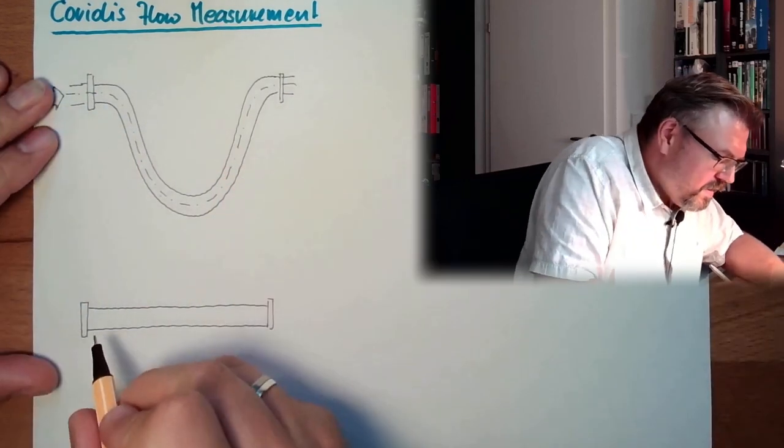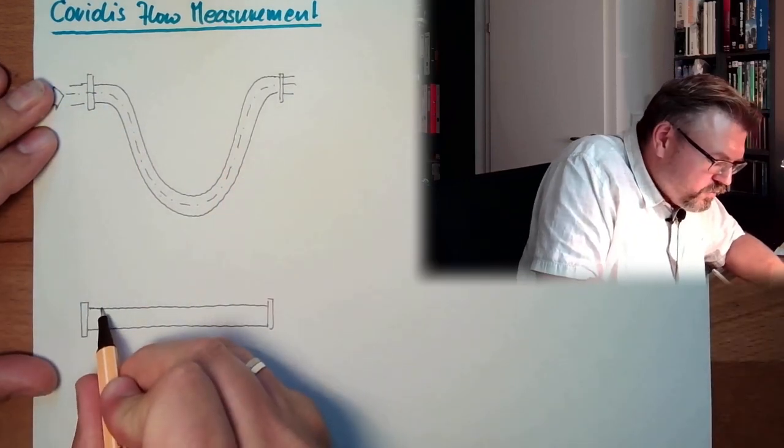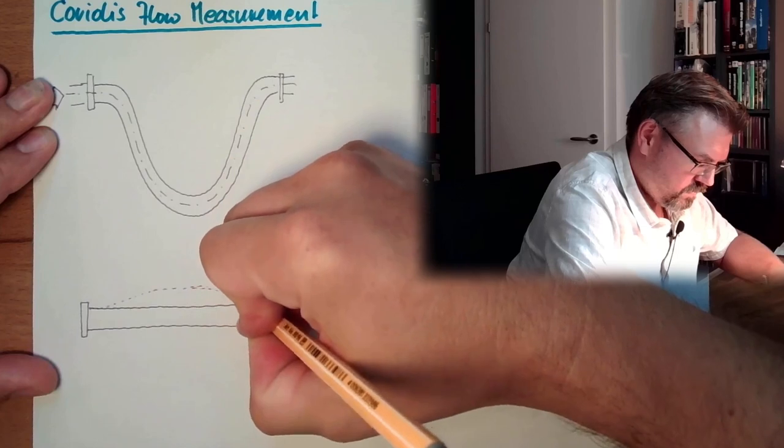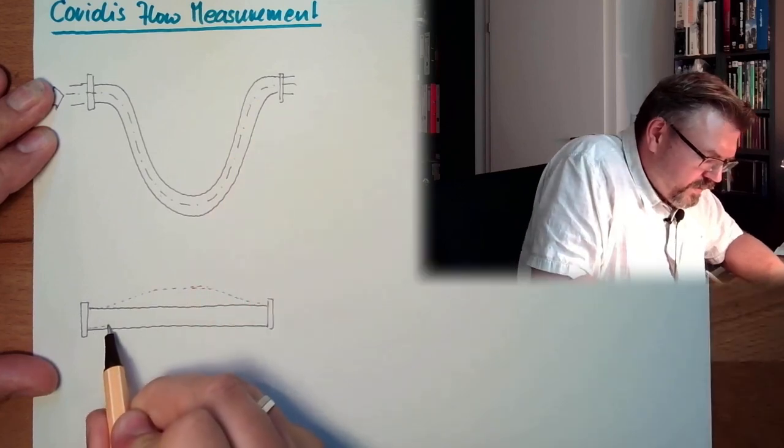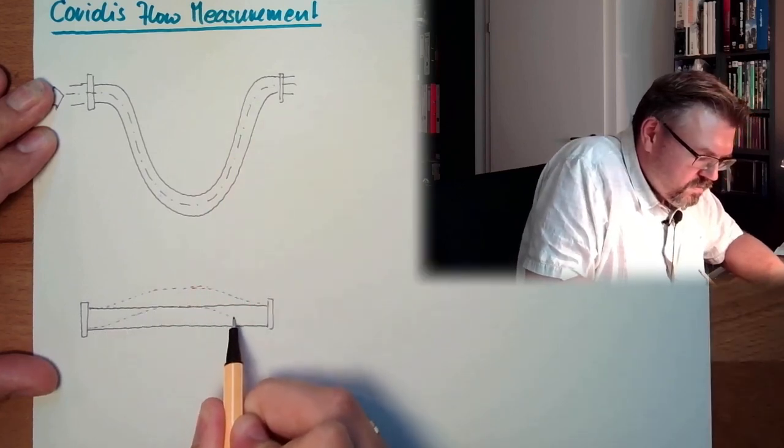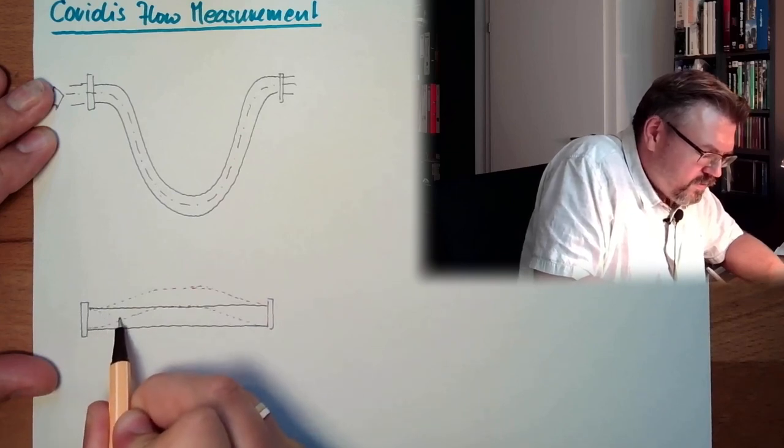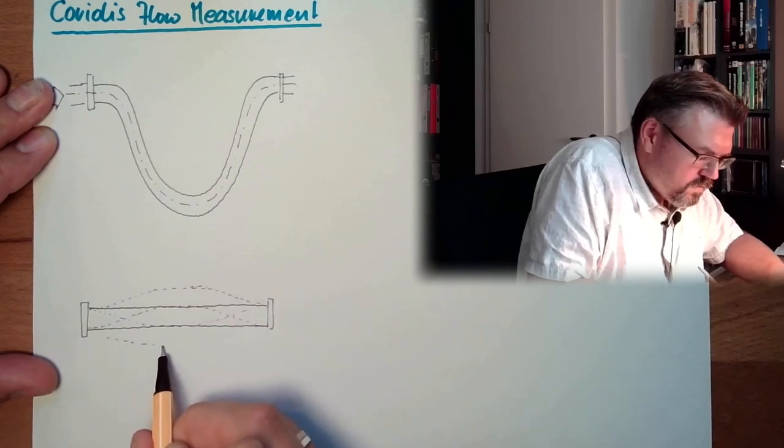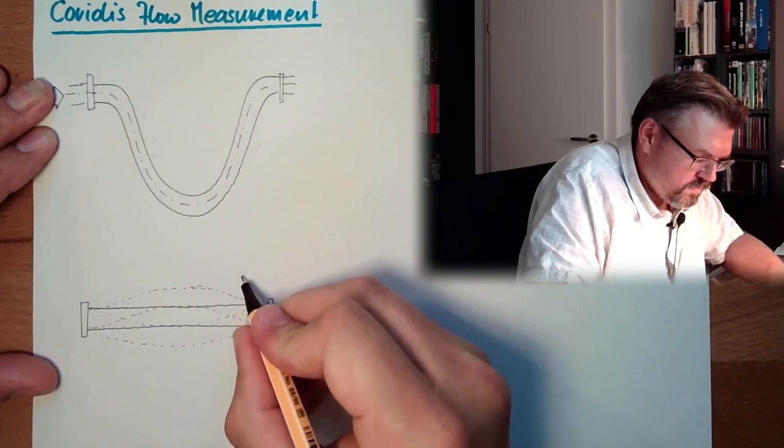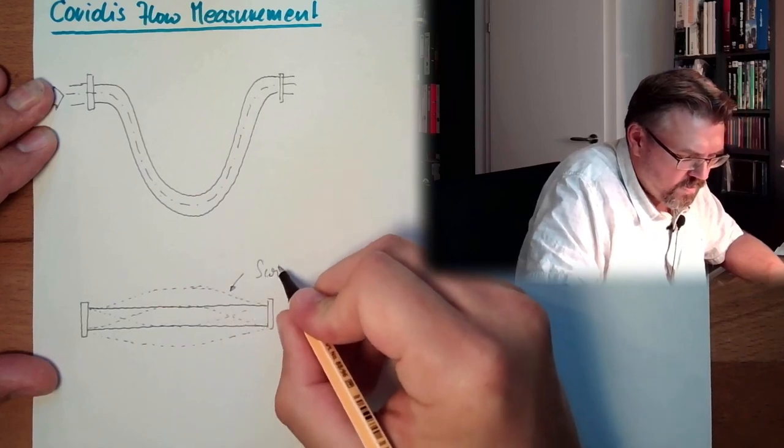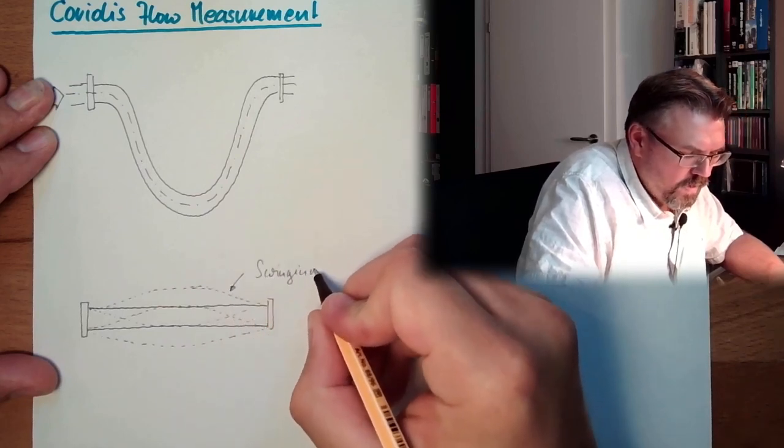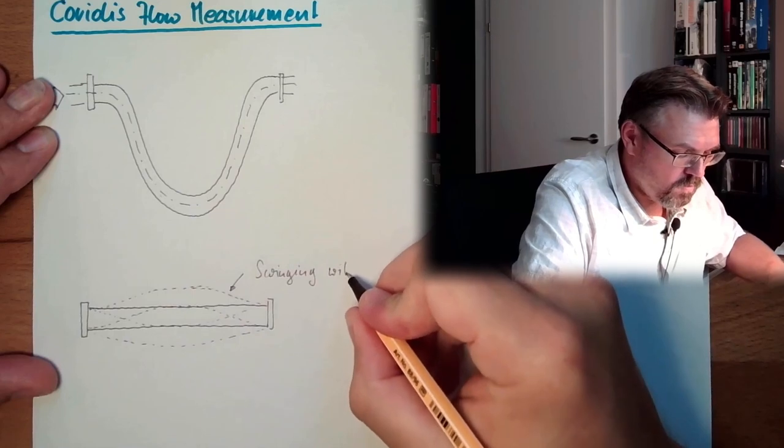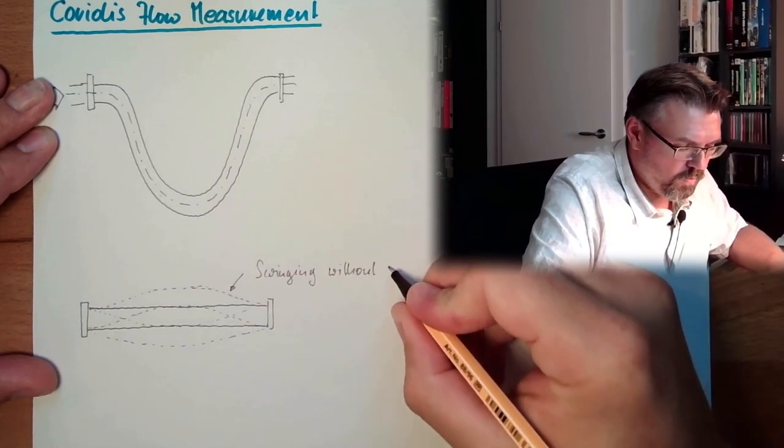But it's left, right, actually. So we are actually swinging here, like that, in one direction and in the other direction. This is swinging. And this is how the swing looks like without water flow, okay? Without water flow.